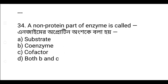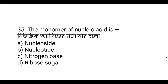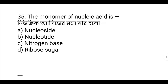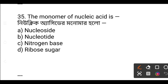Question 35: What is the monomer of nucleic acid? The answer is nucleotide. Nucleic acid's monomer is nucleotide — nucleotide consists of a nitrogen base, a sugar, and a phosphate group.